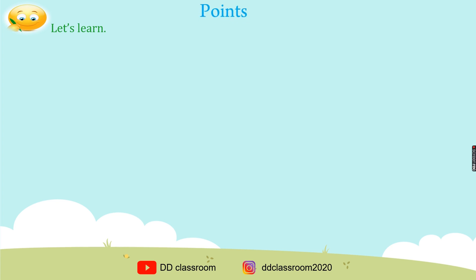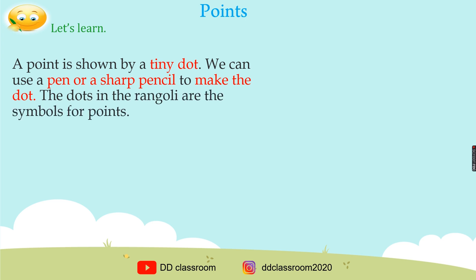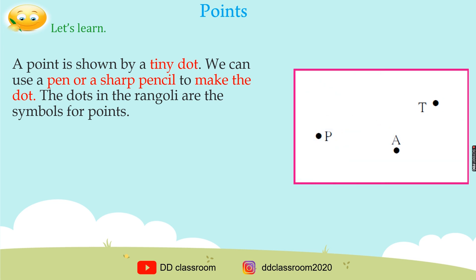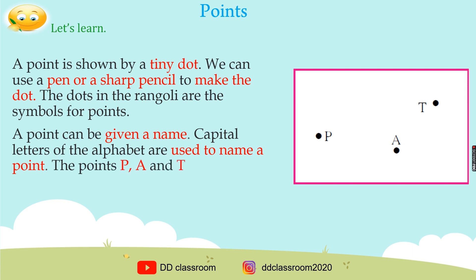Let's learn about points. A point is shown by a tiny dot. We can use a pen or a sharp pencil to make the dot. The dots in the rangoli are the symbols for points. A point can be given a name. Capital letters of the alphabet are used to name a point. The points P, A, and T are shown in the figure alongside.